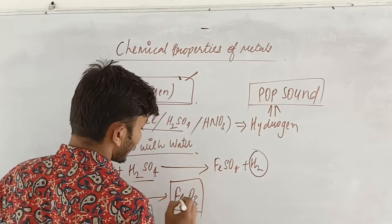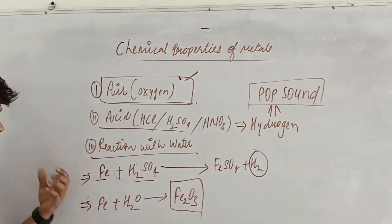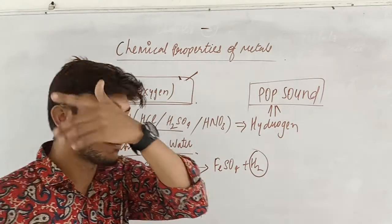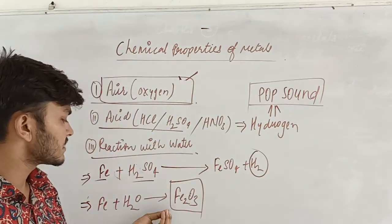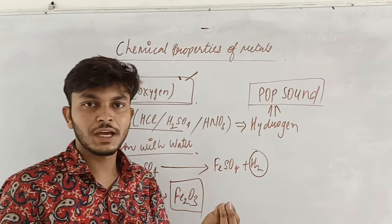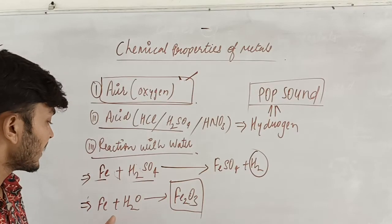When metals react with water, they form metallic oxide, which becomes rust. Because iron reacts with water, this is why iron should be polished or painted. After that, iron no longer reacts with water. It behaves as non-reactive.